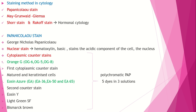EA (Eosin Azure) is the second cytoplasmic counter stain; EA36 is most commonly used, though EA50 and EA65 are also available. EA36 does not contain a single dye — it contains three dyes: Eosin White or Eosin Yellow, Light Green SF, and Bismarck Brown. Papanicolaou stain is polychromatic because it contains five dyes in three solutions: hematoxylin, orange green, eosin white, light green, and Bismarck brown.